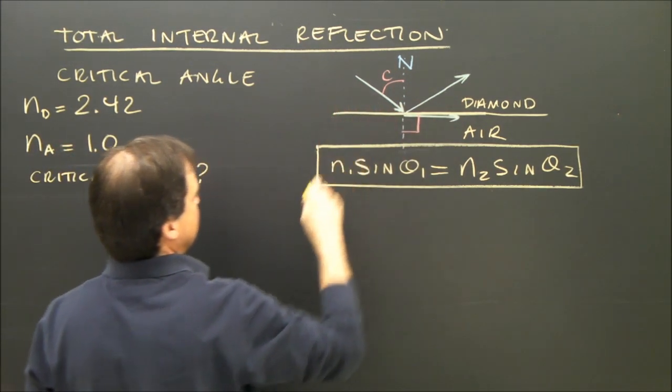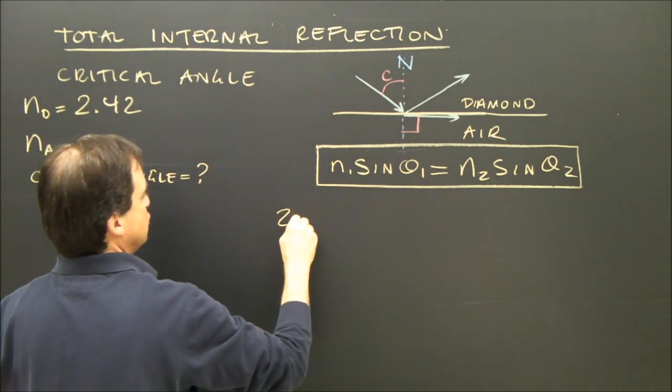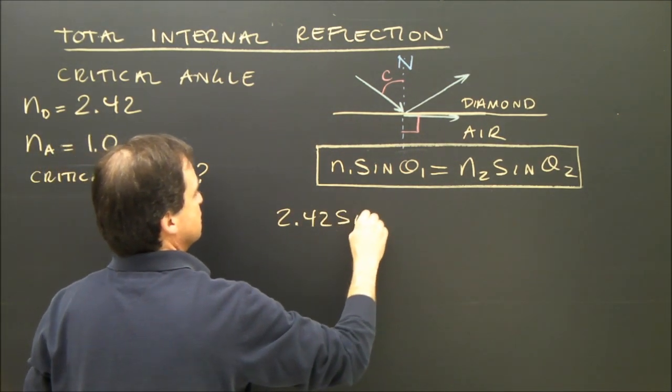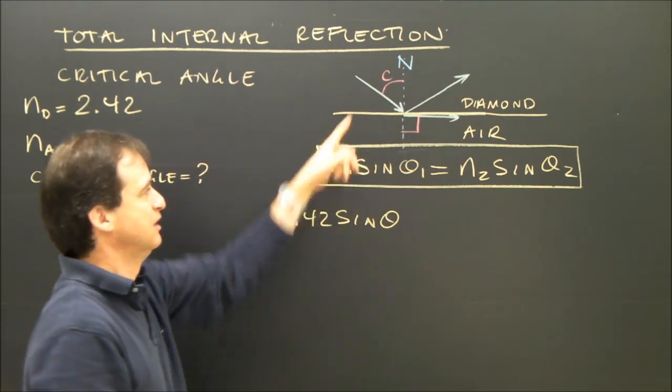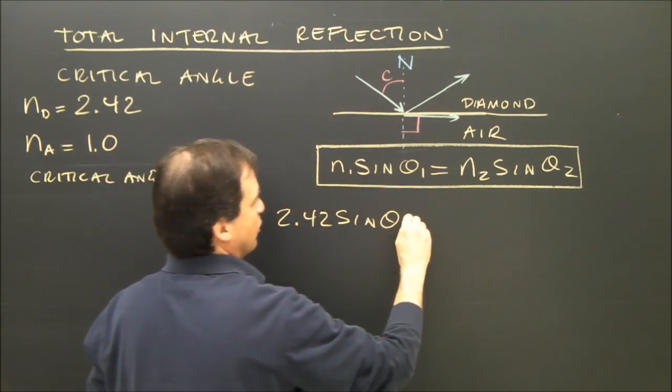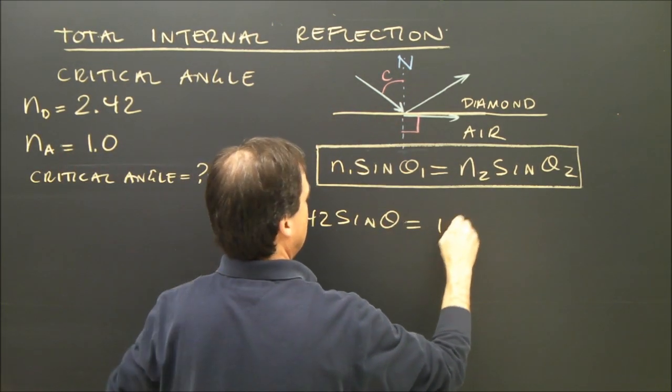The first material is the diamond, so n for diamond, 2.42, sine of the angle in the diamond, that's the critical angle I'm looking for, is equal to 1.0.